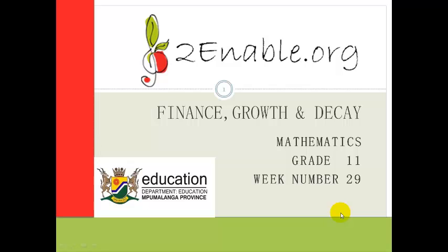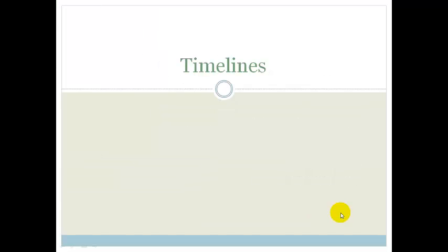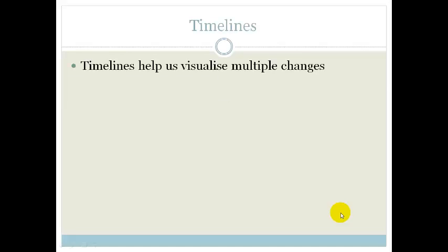Good day Grade 11s. Welcome to week 29. We're carrying on with finance growth and decay, and what we're doing in this lesson is learning about timelines. We use timelines because they help us visualize multiple changes — for example, a whole bunch of changes in deposits, some withdrawals, and maybe an interest change. A timeline helps us visualize what's going on so we can work out the sums. Let's look at an example.